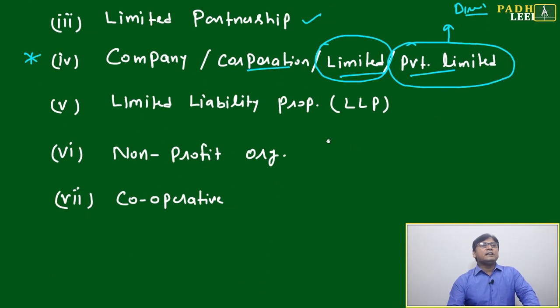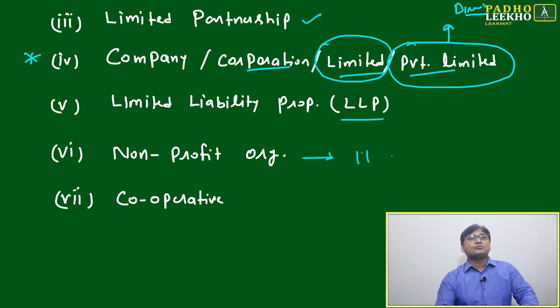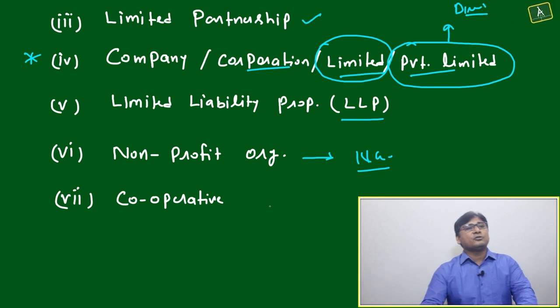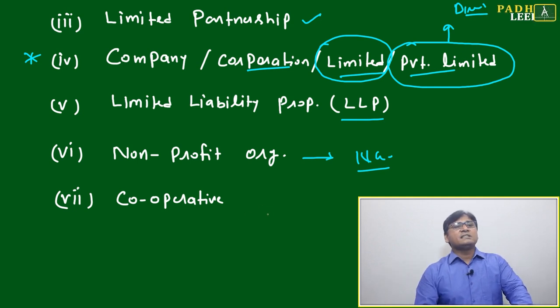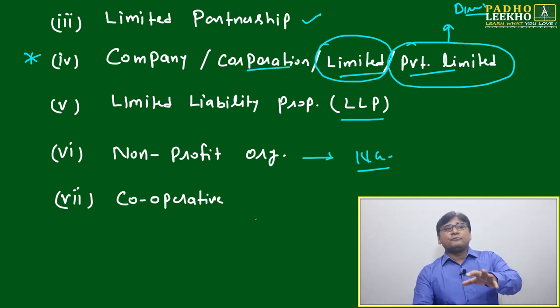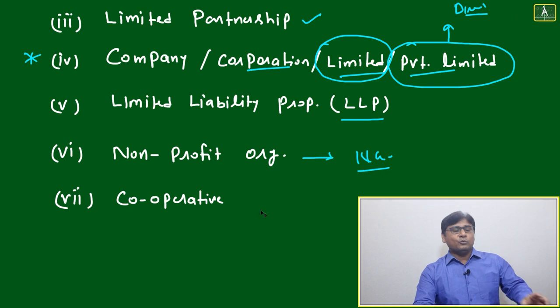Next is Limited Liability Proprietorship (LLP). Next is non-profit organization, that is NGO. Many times we say non-government organization or non-profit organization. NGO is one type of non-profit organization.